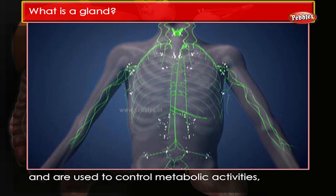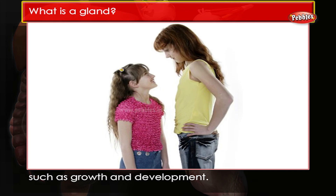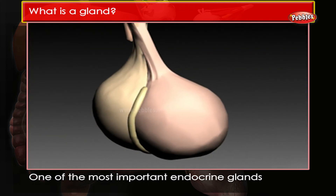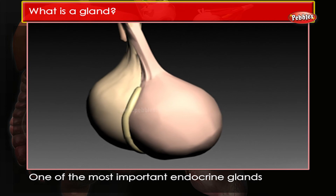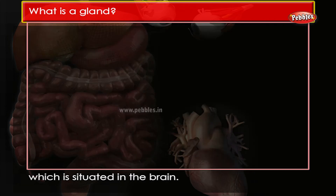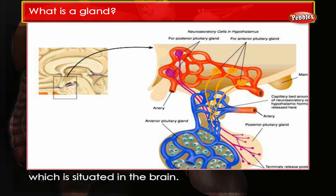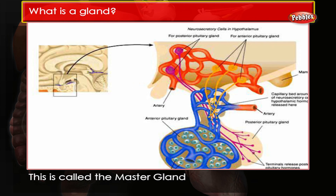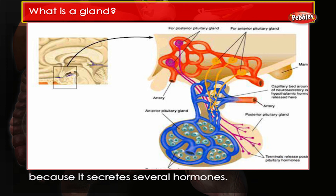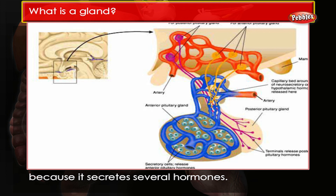Hormones control metabolic activities such as growth and development. One of the most important endocrine glands is the pituitary gland, which is situated in the brain. This is called the master gland because it secretes several hormones.